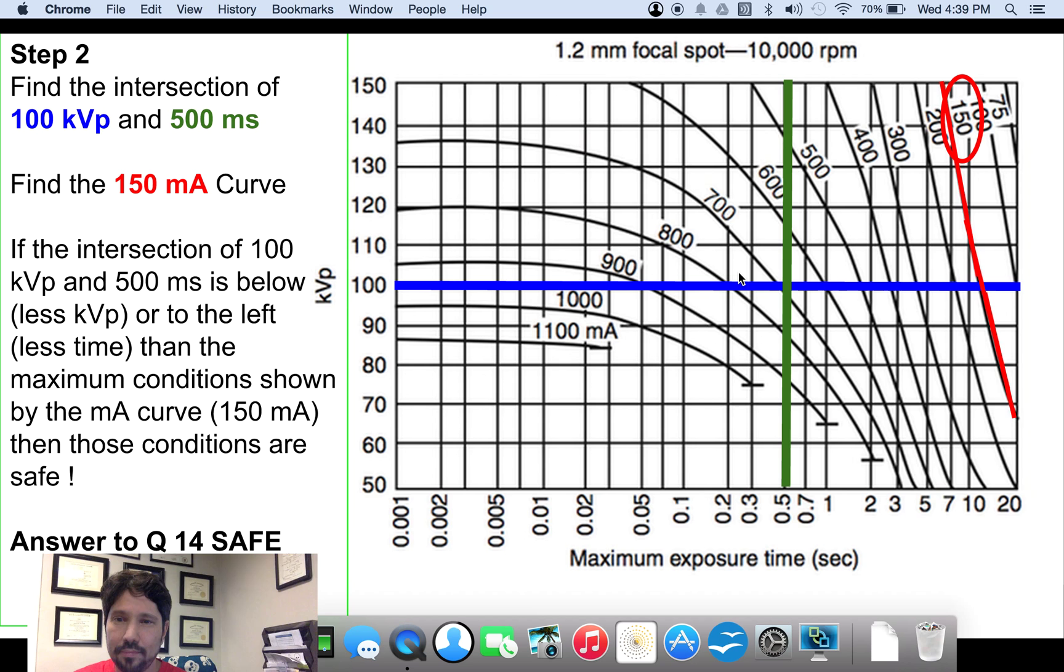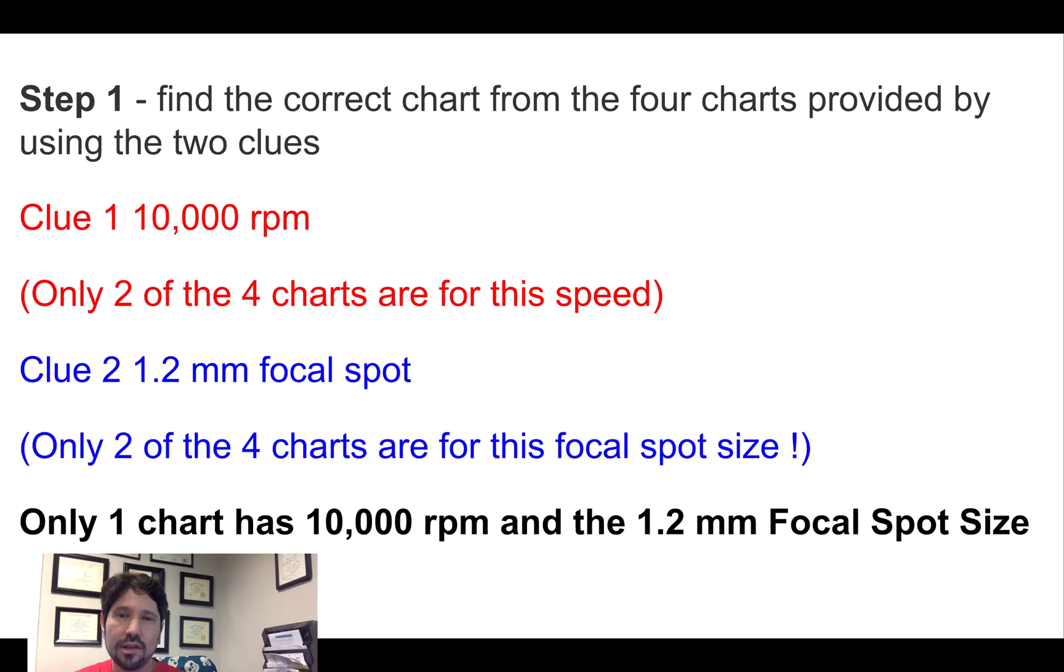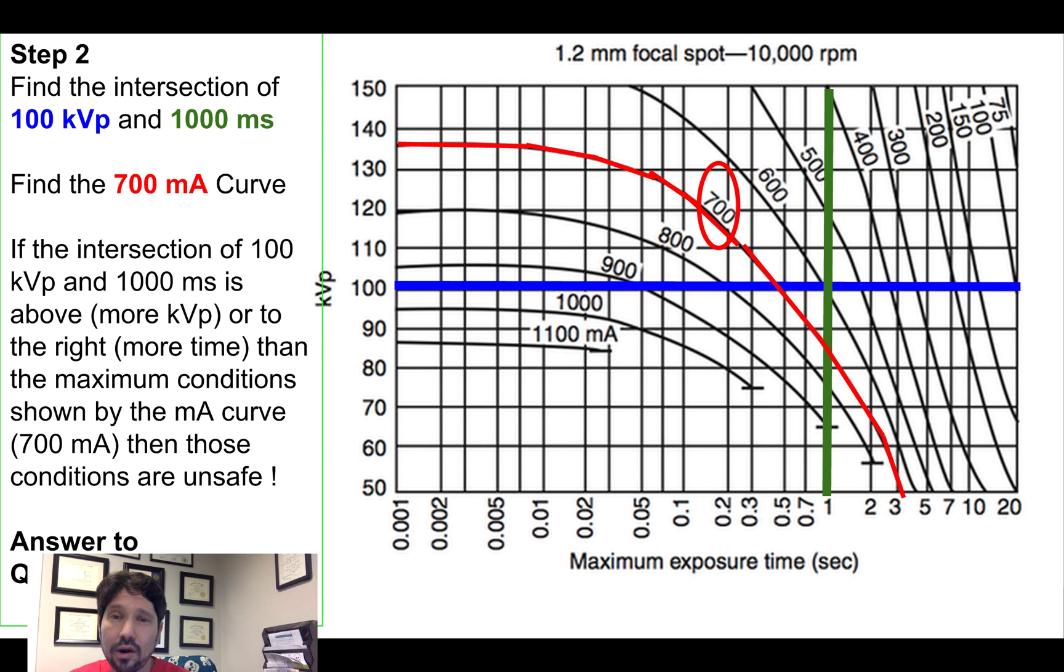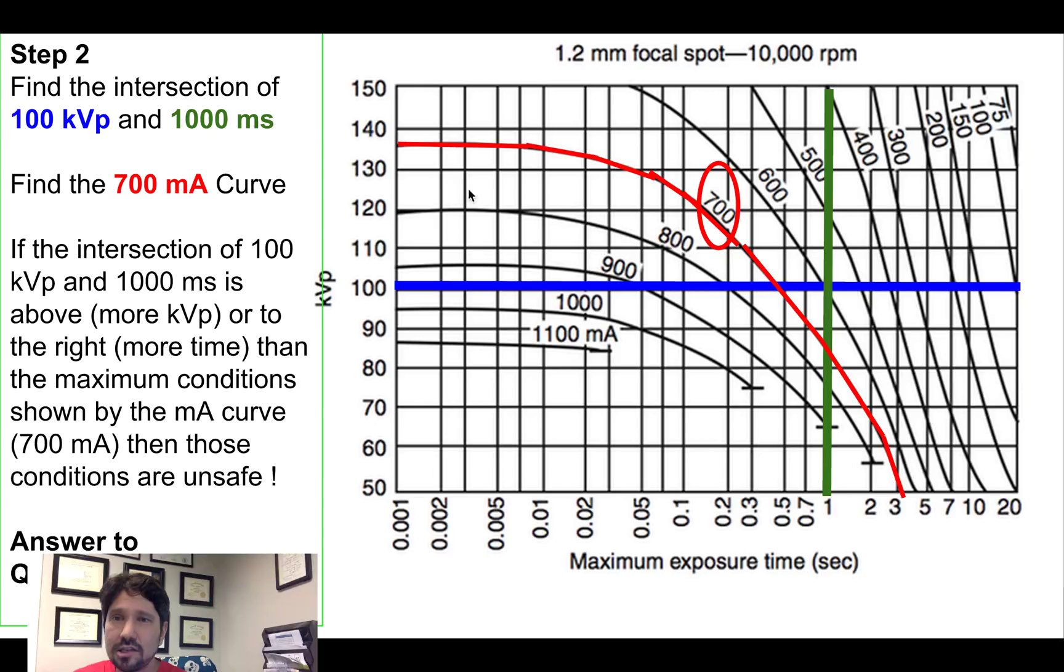So let's do another problem. In this problem, again, they give us the 10,000 RPM, the 1.2 millimeter focal spot, but we've got new conditions. We've got the 700 mA curve. So we're going to find that same graph. It's the same one of the four. And now we're going to draw our blue line at 100 kVp. So that didn't change. But now we're talking a thousand milliseconds, which is one second. So I draw my green line at one second. And here's their intersection.